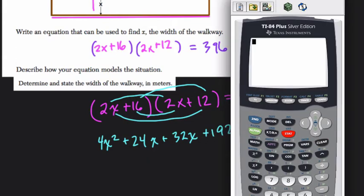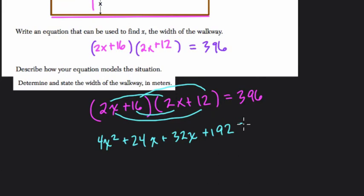And I'm going to check because I always slip up with my arithmetic. Yes, 192. And that equals 396. So we have 4x squared plus 56x. I combine 24 and 32. Plus 192 equals 396.